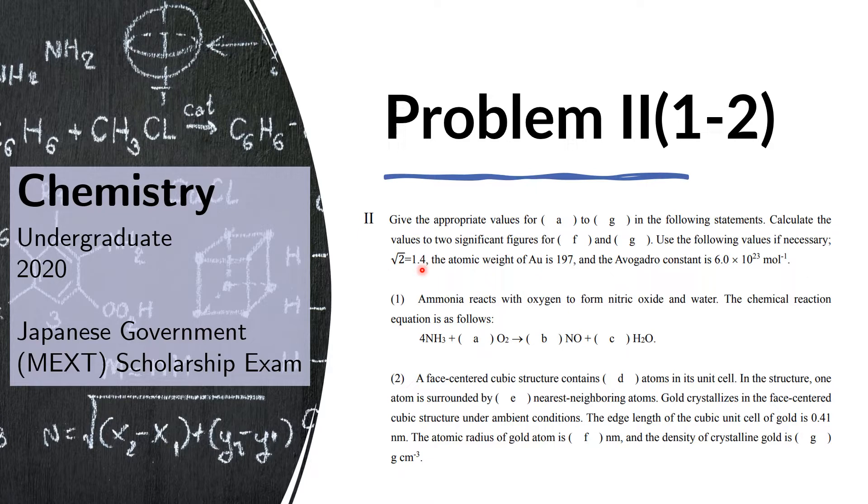The square root of 2 is 1.4. The atomic weight of gold is 197, and the Avogadro constant is 6.0 times 10 to the 23rd per mole.